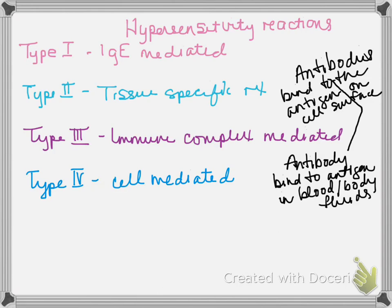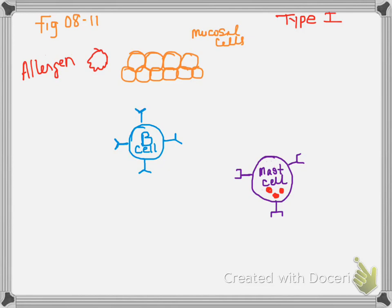Alright, so we will start with Type 1 and work our way through. So with Type 1 hypersensitivity, you are going to see this in figure 08-11 in your books. And I am going to explain it a little bit further. So what you have is an allergen. And this allergen is going to come over and attach itself to the mucosal cells.